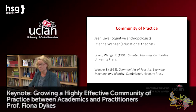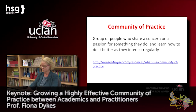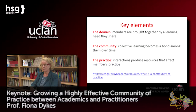First of all, just to remind you of what a community of practice is. The concept originally came from Jean Lave, a cognitive anthropologist, and Etienne Wenger, an educational theorist, who published a book called Situated Learning in 1991 in Cambridge. They define a community of practice as a group of people who share a concern or a passion for something they do and learn how to do it better as they interact regularly. They define three key elements: the domain — members are brought together by a learning need they share; the community — which involves collective learning and becomes a bond among them over time; and the practice — interactions that produce resources that affect members' practice.